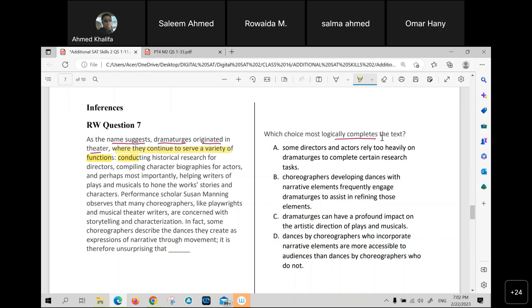Dramaturgists, conducting historical research for directors. They conduct historical research for the director, compiling characters, biographies for actors. Oh my god, they do a lot of things, what else? And perhaps most importantly, helping writers of plays and musicals to hone, to improve the work, stories, and characters. We have got a very good word here, please write it down. Hone, improve.